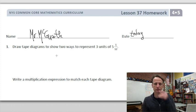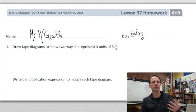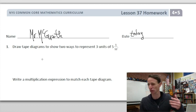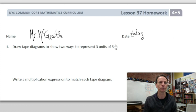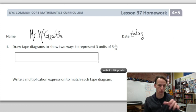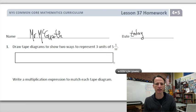Our instructions for number one: draw tape diagrams to show two ways to represent three units of five and one-twelfth. What we mean by three units of, or sometimes they say three copies of, is simply multiplication. So let's draw two rectangles because we have to do two ways.